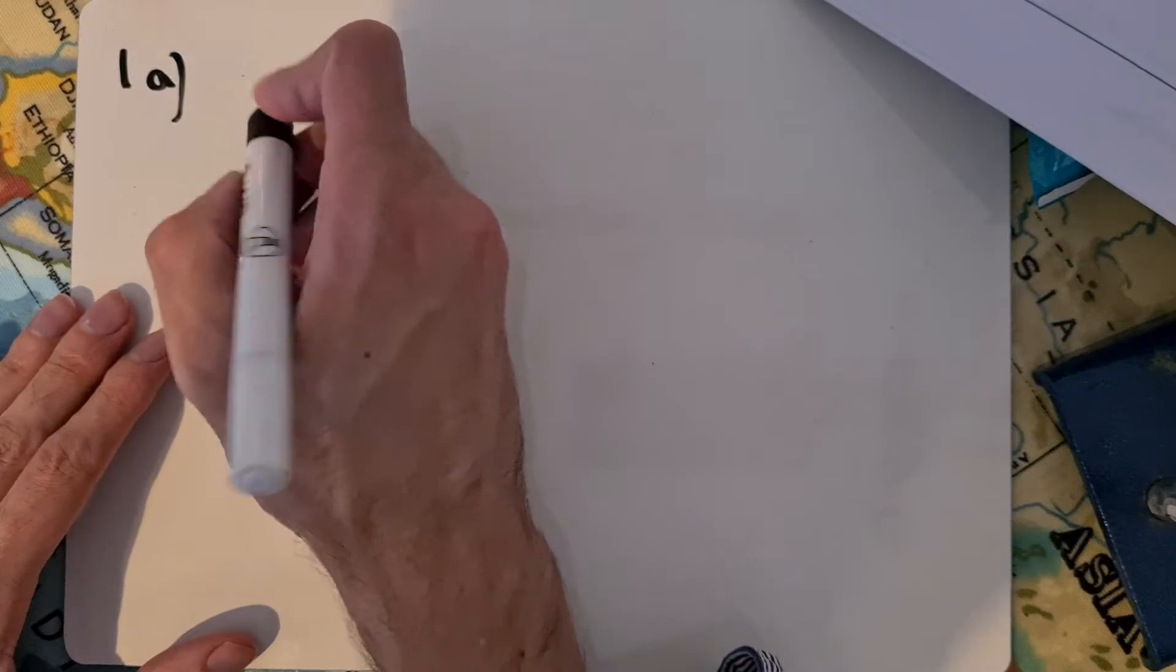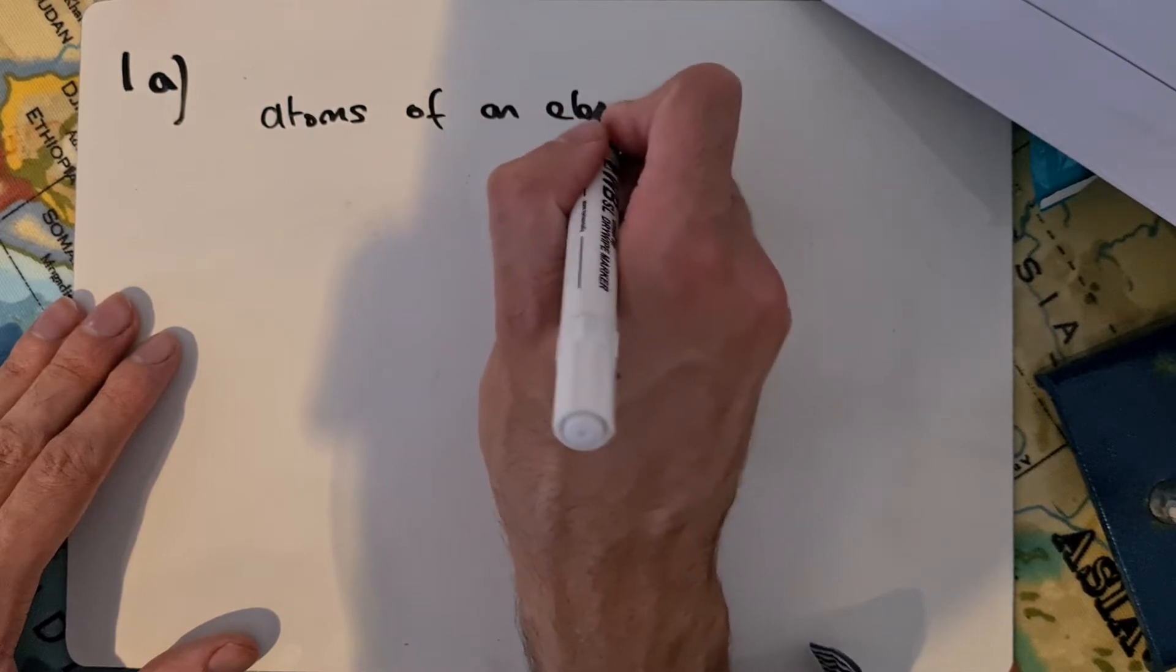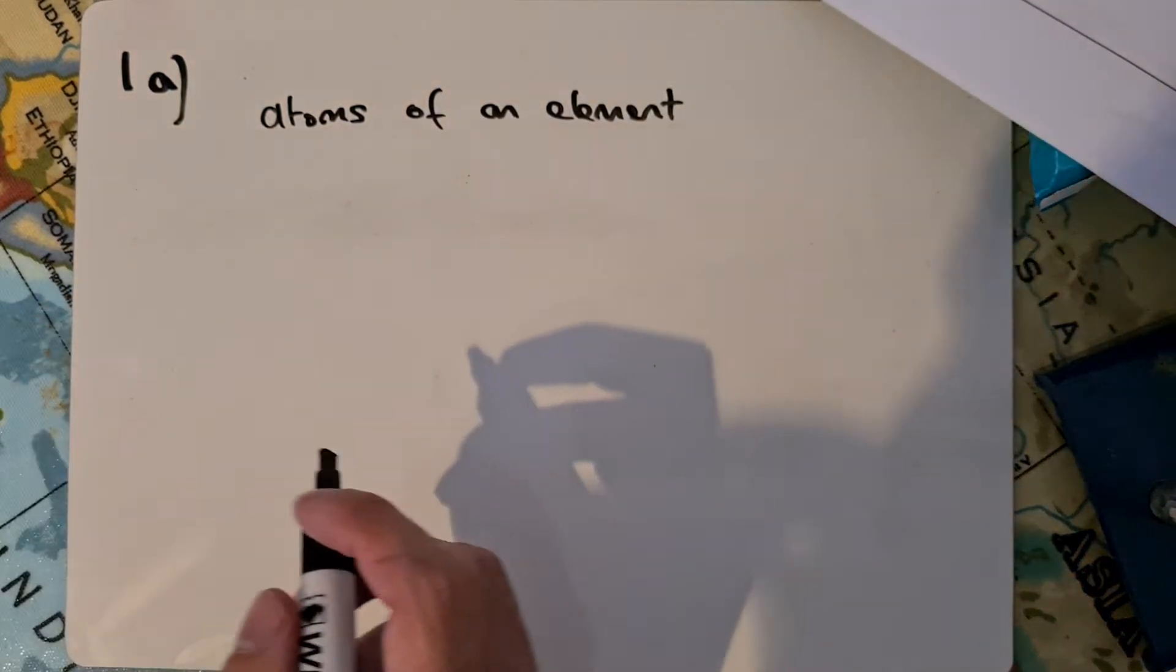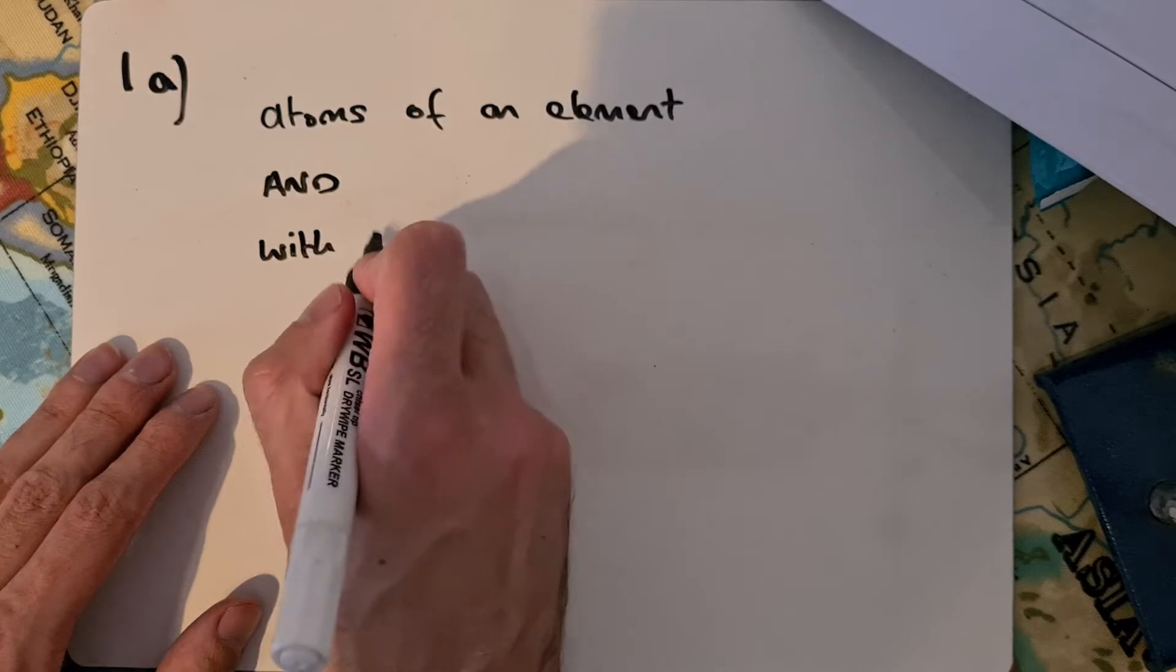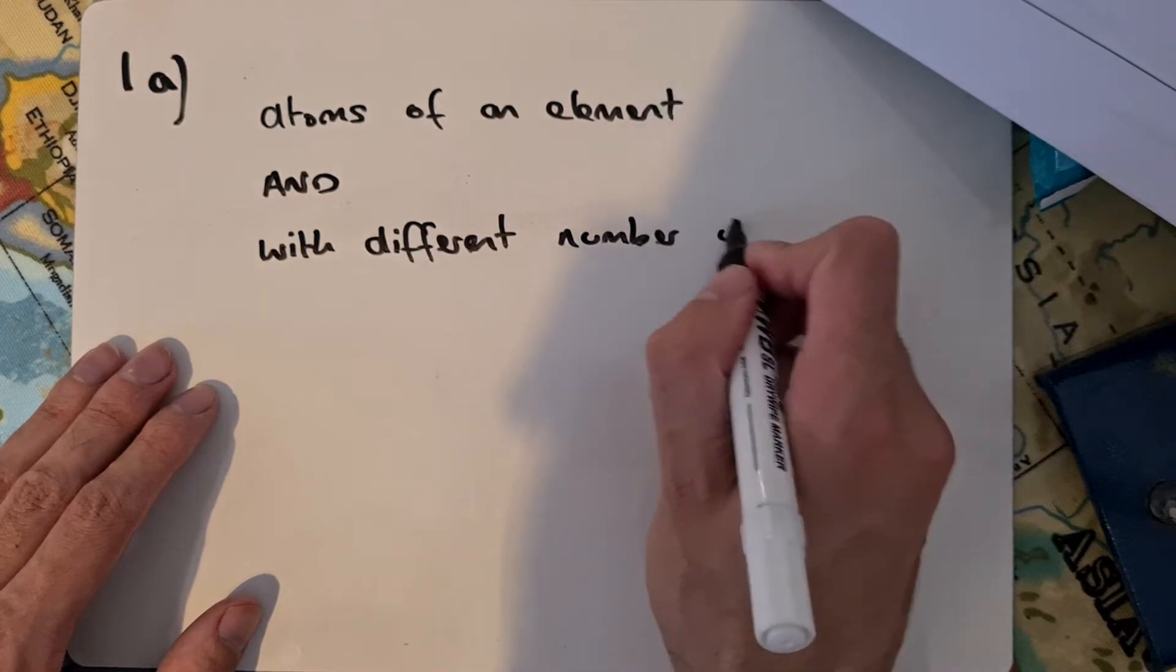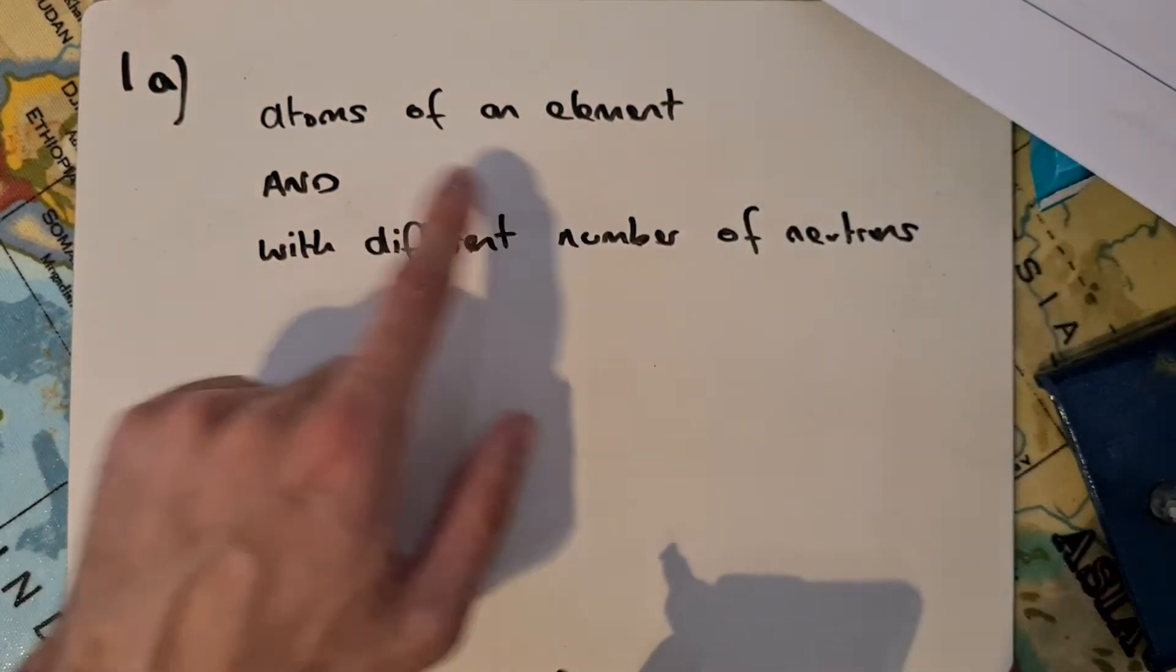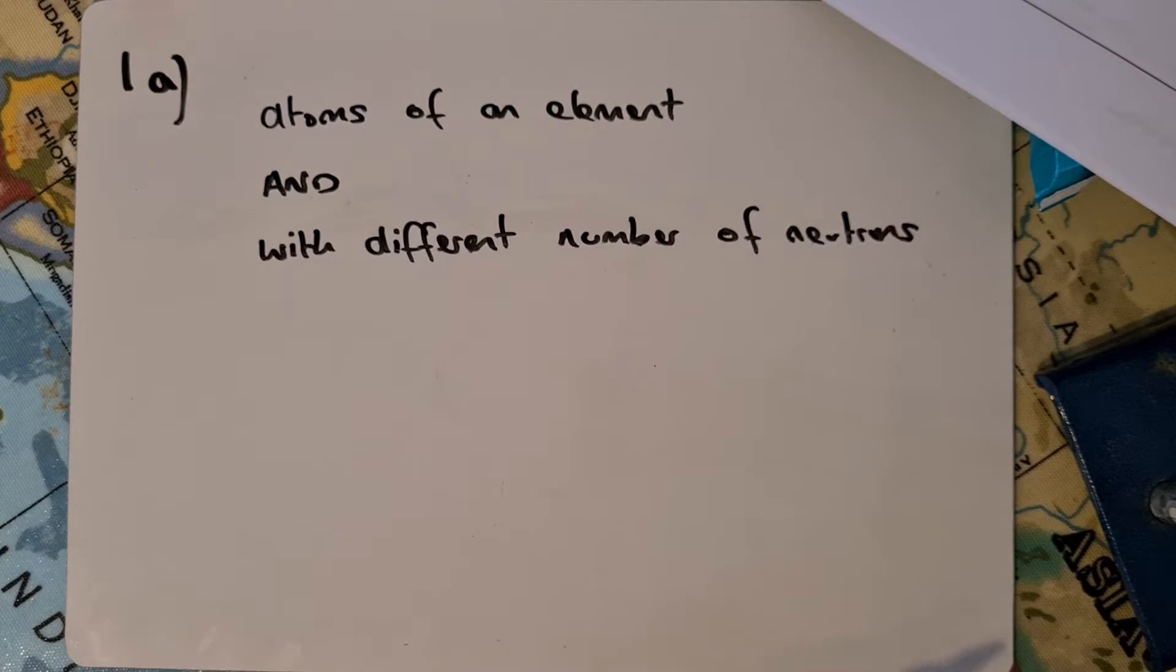Question 1a asks you to explain what is meant by the term isotopes. You needed to say atoms of an element - the key word was atoms - and they're all of the same element, with different number of neutrons. It would have been accepted with the same number of protons or atomic number, but really we're looking for that different number of neutrons.